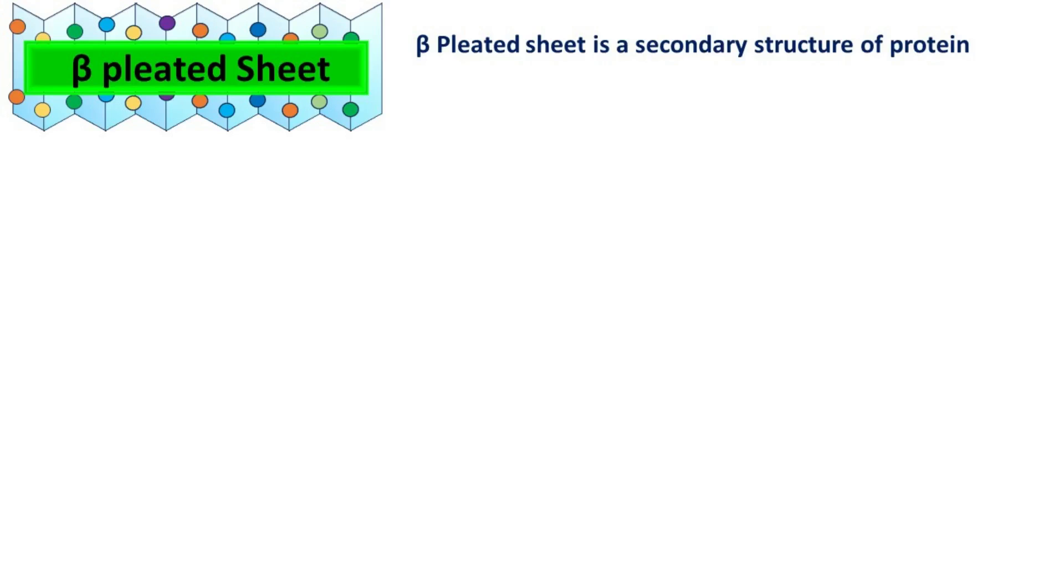Beta-Pleated Sheet is a secondary structure of protein where two or more segments of polypeptide chain overlap one another by hydrogen bonding.